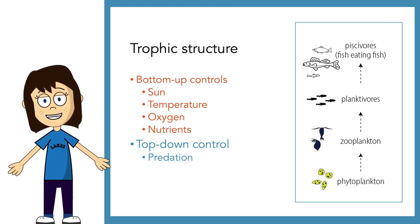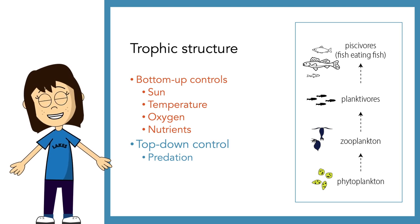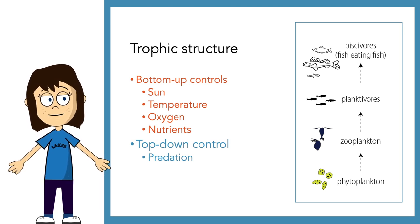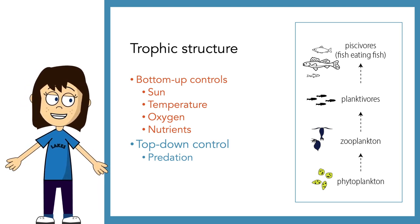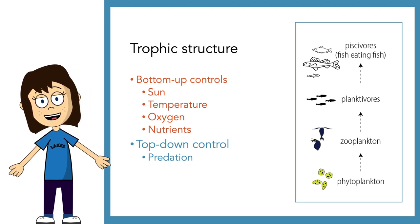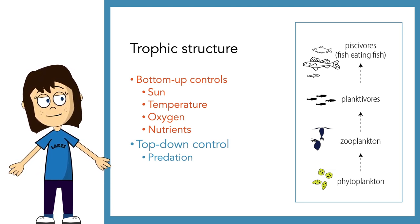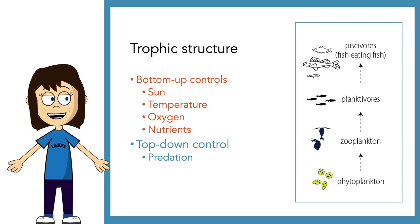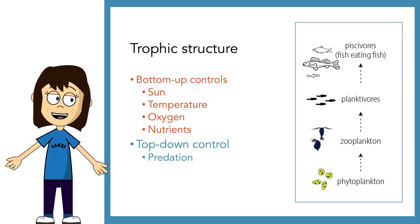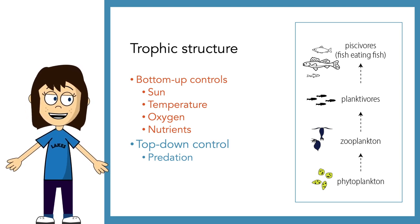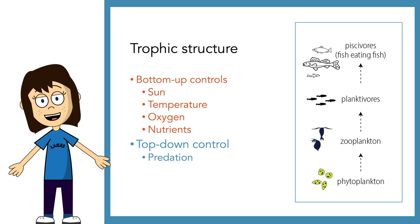We also have top-down control, which we can consider predation — or perhaps harvest of fish by humans. If there's lots of predation, these populations are going to be limited in how big they can get. And remember, predation occurs at multiple levels in this food chain: zooplankton predate on phytoplankton, planktivores predate on zooplankton, and so populations can be limited by predation at different levels.